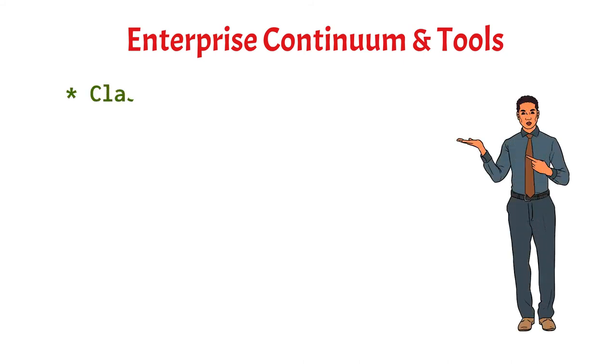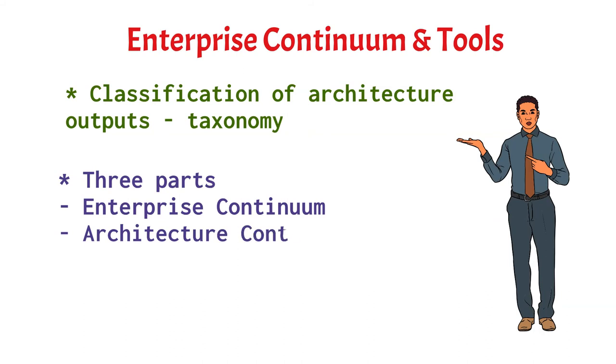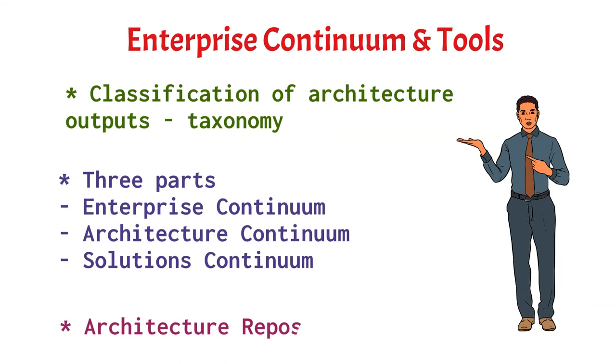The fifth part of TOGAF is the enterprise continuum and tools, which deals with taxonomy. Taxonomy is essentially about classification of architecture outputs. There are three parts addressed in the enterprise continuum and tools part: the enterprise continuum, architecture continuum where we have the architecture building blocks, and the solutions continuum where we have the solutions building blocks. In essence, eventually we have to deal with what we call the architecture repository, where our architecture building blocks and architecture artifacts are stored.